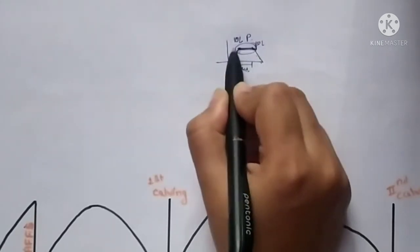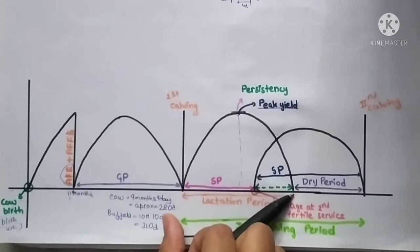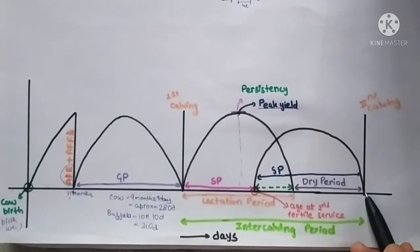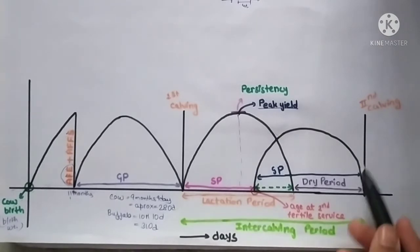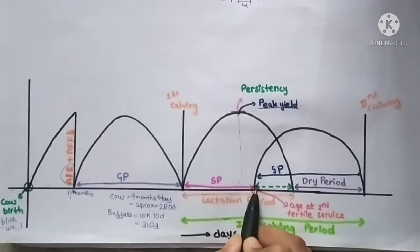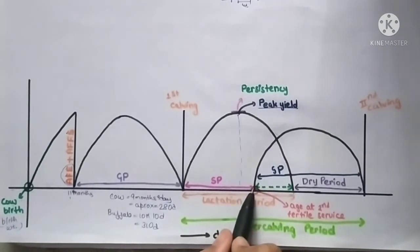After the completion of the lactation period, the dry period starts. After the dry period, second calving starts. From this point to this point, the service period occurs, and at this point, age at second fertile service occurs, meaning the second successful conception.